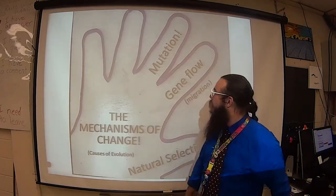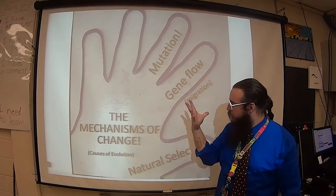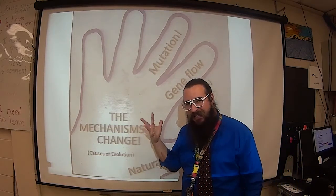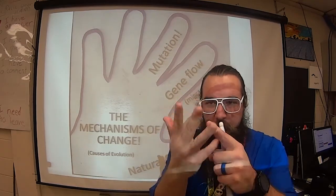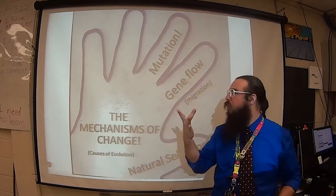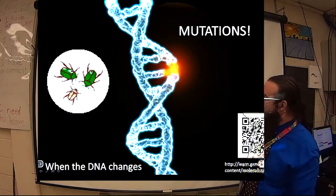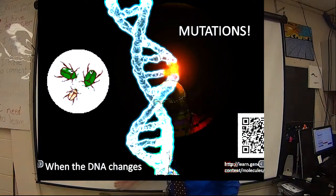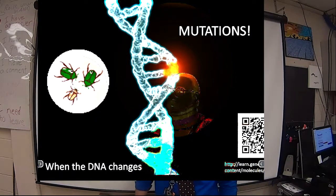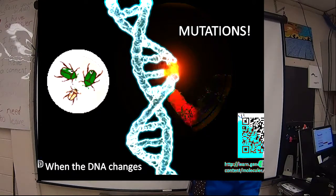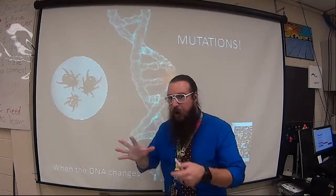The next mechanism is mutation, on the middle finger. Be careful when teaching your friends about the mechanisms of evolution — make sure you show them the ring finger, not the bad finger. Most of the time, when the DNA changes — which is what a mutation is — it's usually a bad thing. It's sort of like Mother Nature giving you the finger. So that's why the middle finger gets mutation: it's usually bad.